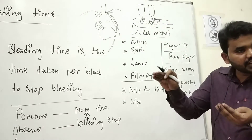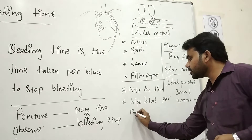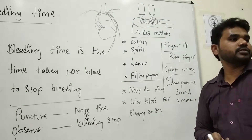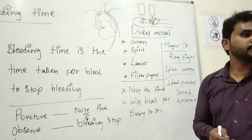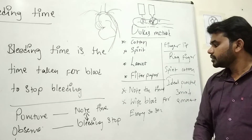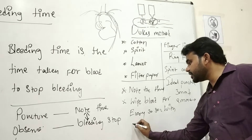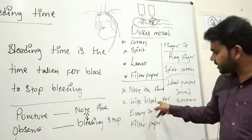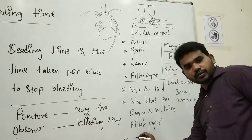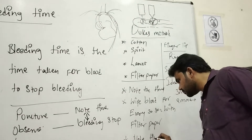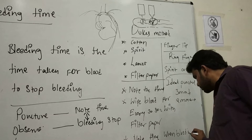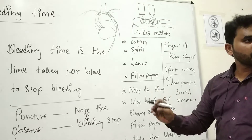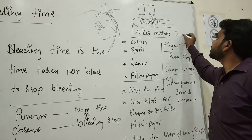After noting the time, the next step is to wipe the blood — wipe the blood for every 30 seconds with filter paper. Wipe the blood every 30 seconds with the filter paper, and lastly note the time when bleeding is stopped. This is the procedure for the Dukes method. The normal bleeding time when using the Dukes method is 2 to 6 minutes.